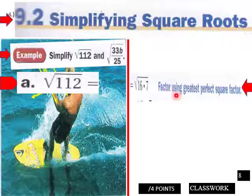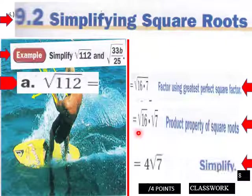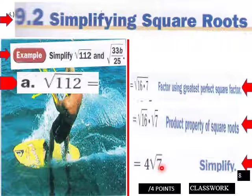And then you separate out √16 times √7 as your product property of square roots. And then of course the square root of 16 is 4 times the square root of 7. So that would be the way that you would simplify the square root of 112.